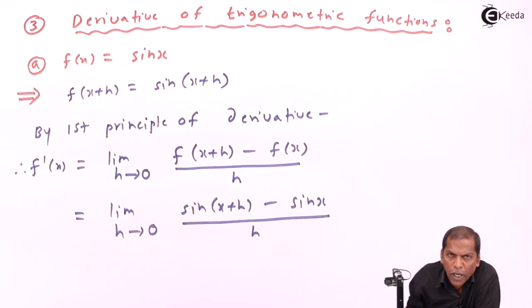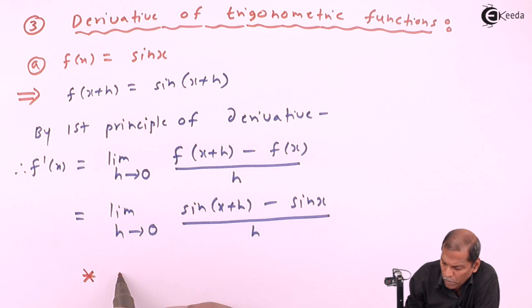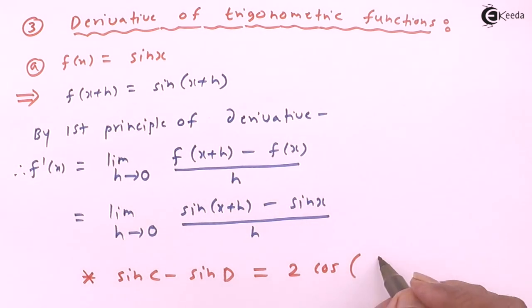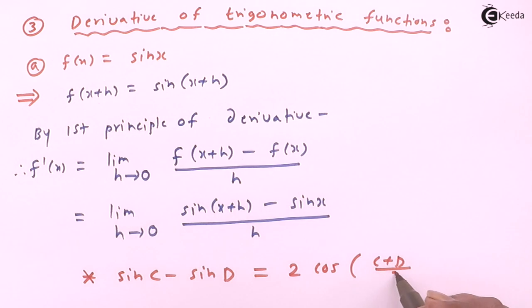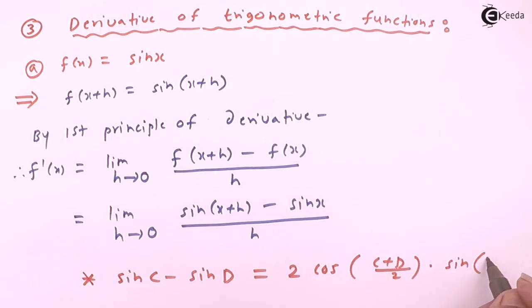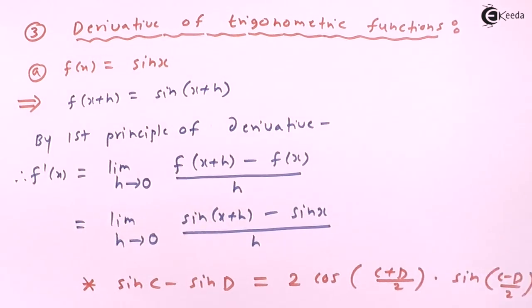So here we use formula sin c minus sin d, that is equal to 2 cos in bracket (c+d) upon 2, into sin in bracket (c-d) upon 2.